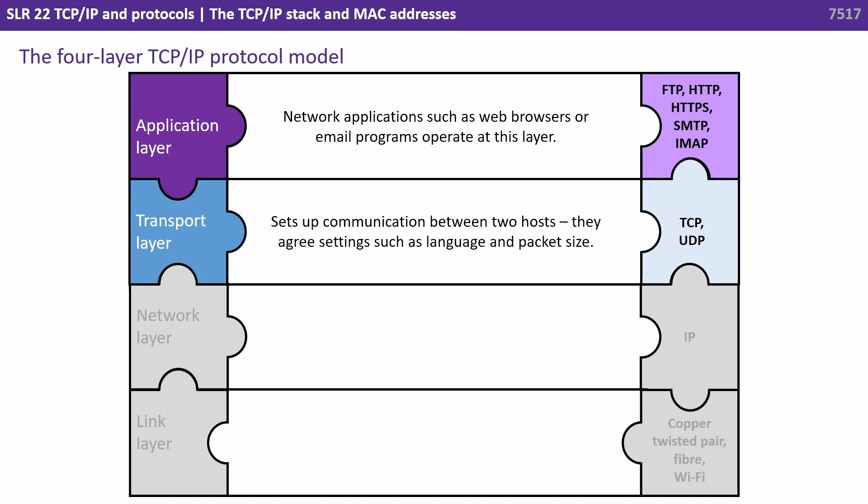Next we have the transport layer. This layer is responsible for setting up communication between two hosts; they agree settings such as language and packet size. This is where protocols like TCP and UDP sit.